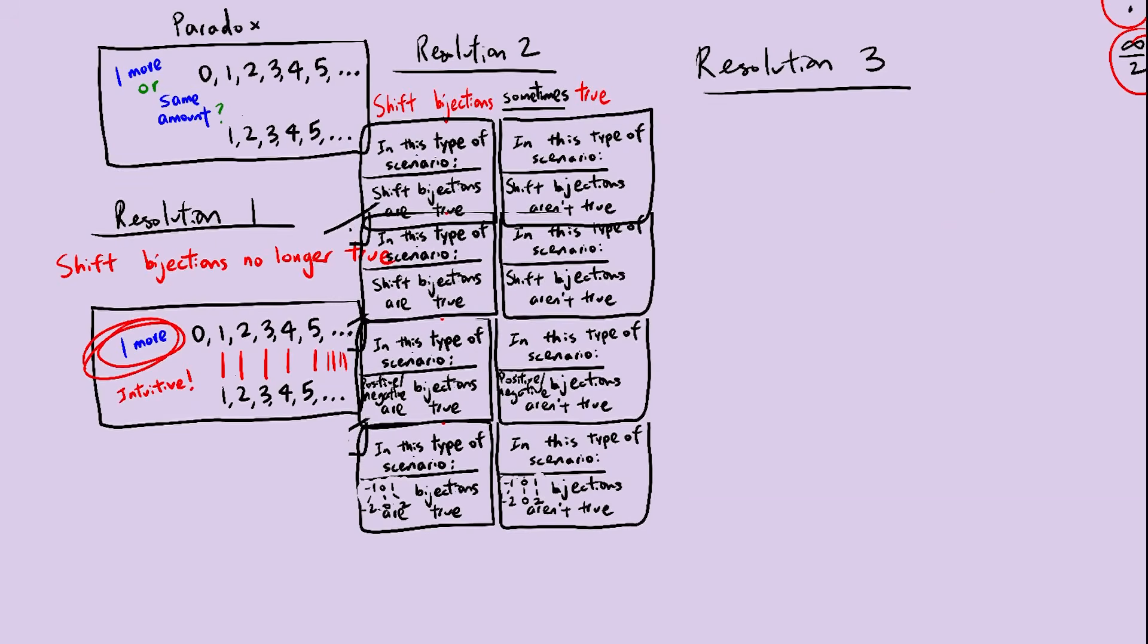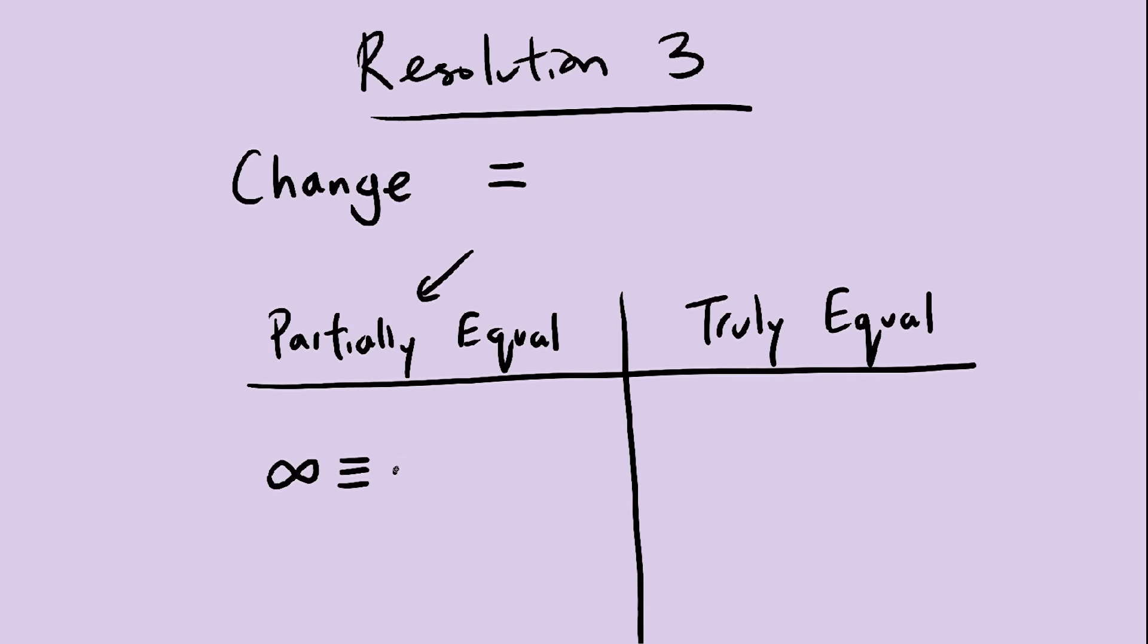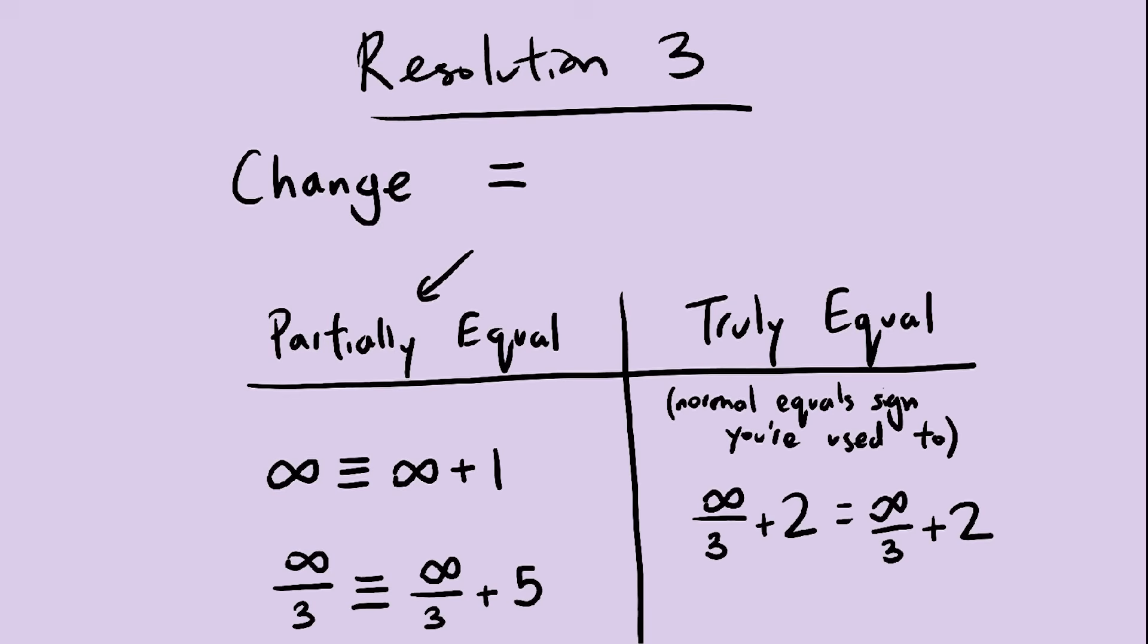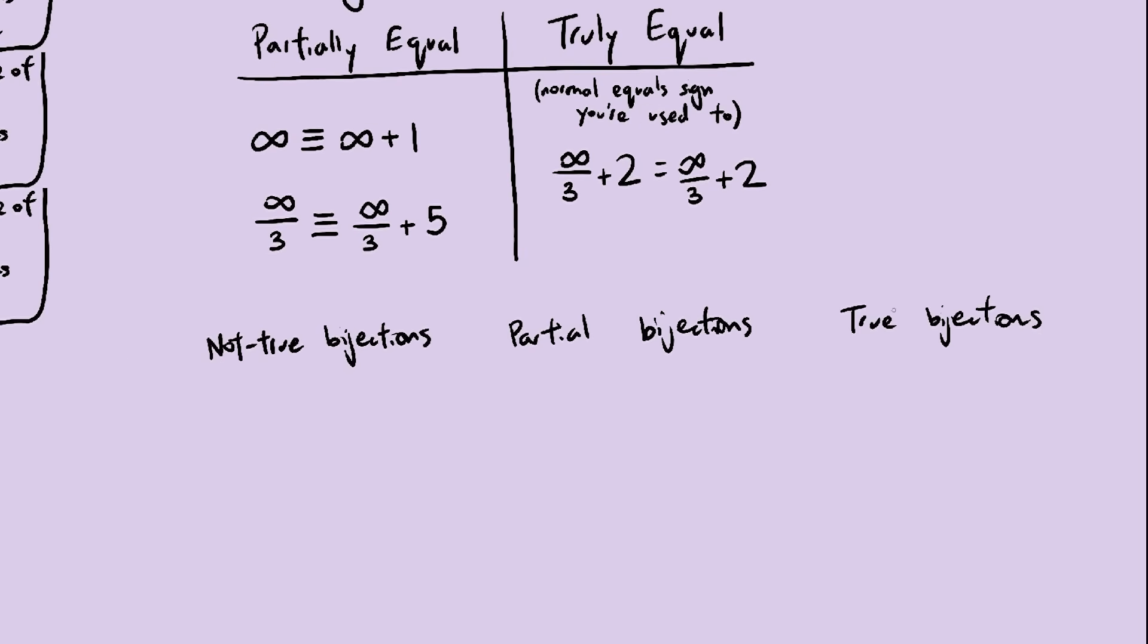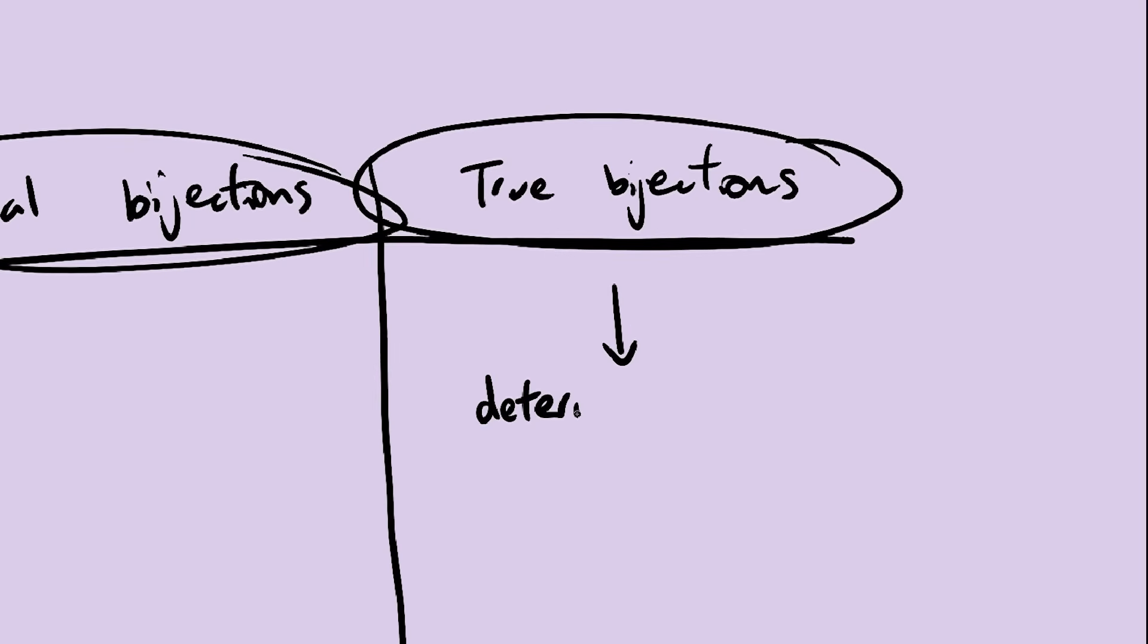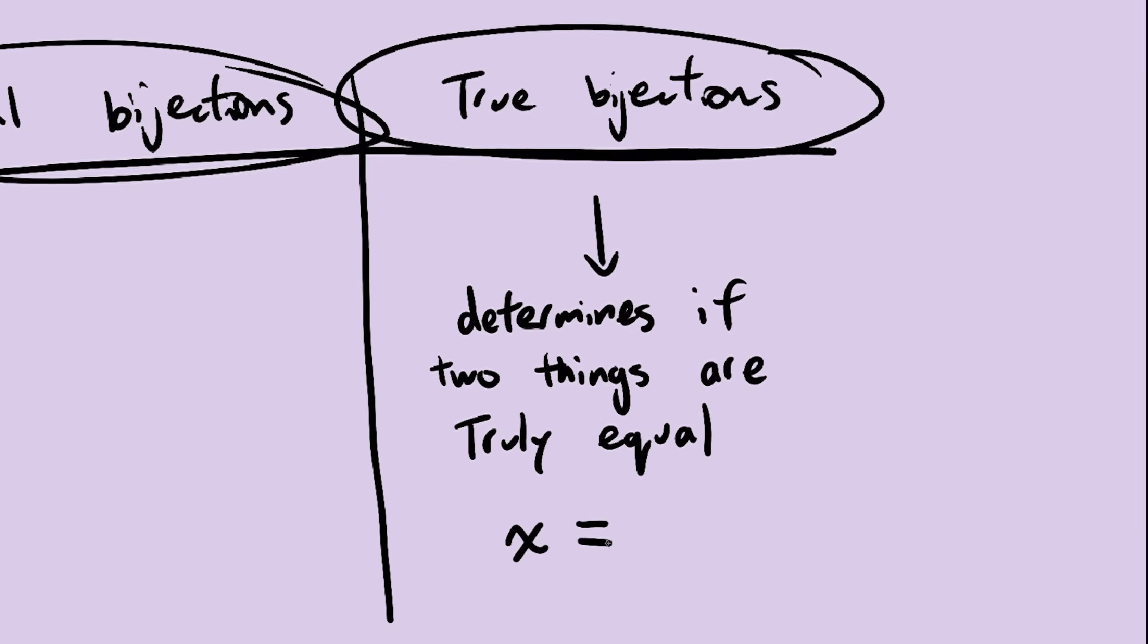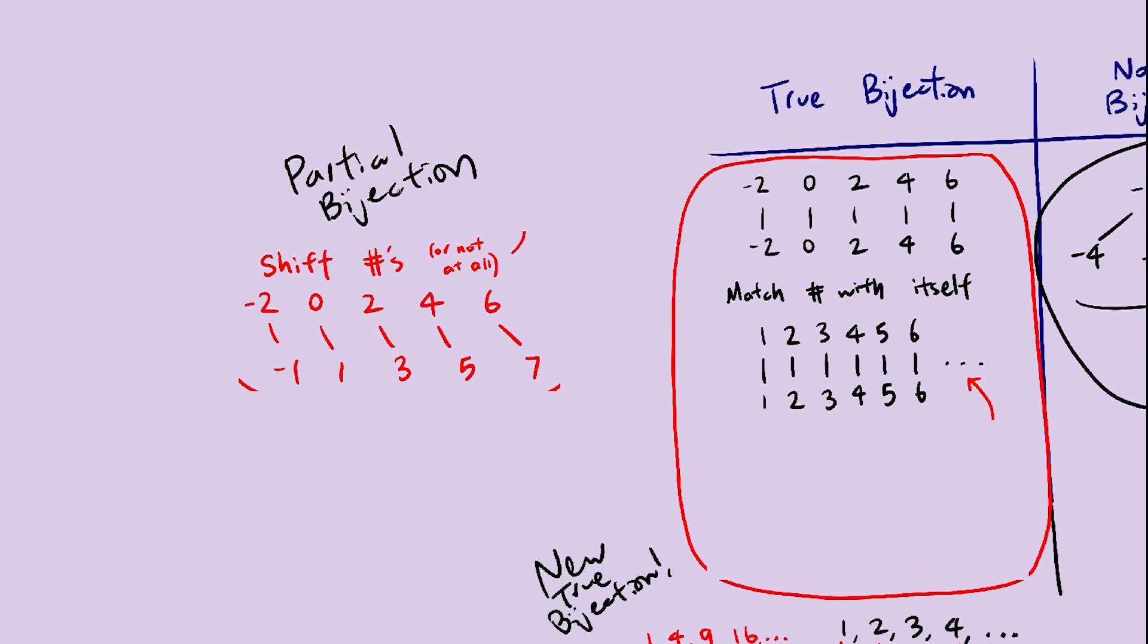The third resolution to this paradox is, we come up with a better definition of what it means to be equal. Things can be partially equal, or they can be truly equal. Partially equal means they are equal in terms of infinity, but might not be equal in terms of finite numbers. Truly equal means that they are equal in terms of both. This is the meaning of equal you're used to. But this new definition of equality, by itself, doesn't solve the paradox. We need to add a new category of bijection. Instead of there just being true bijections and not true bijections, we now also have partial bijections, which are kind of a mix between the two.